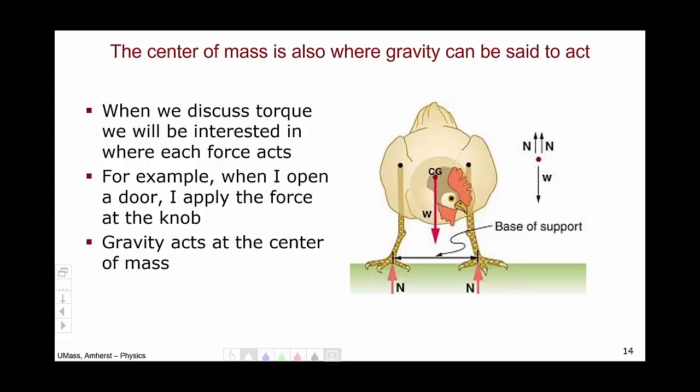Gravity acts at the center of mass. So if we look at this chicken, and we were to make a free body diagram, we would say there are two normal forces, one for each foot, and the weight force. But now we're going to start thinking about where each force is being applied. The two normal forces are being applied one on each foot, so they're being applied there,